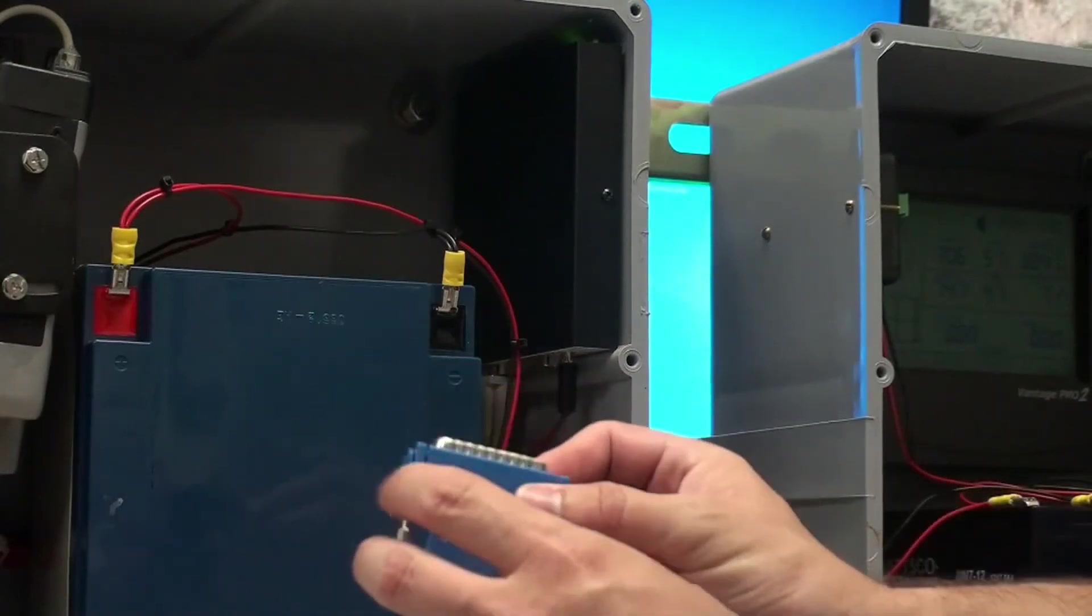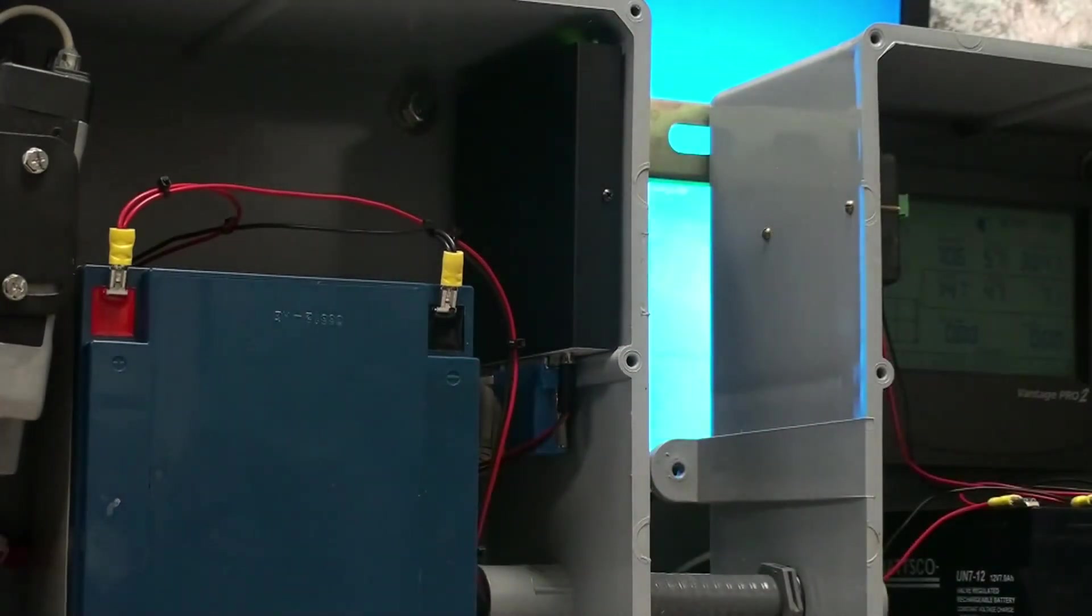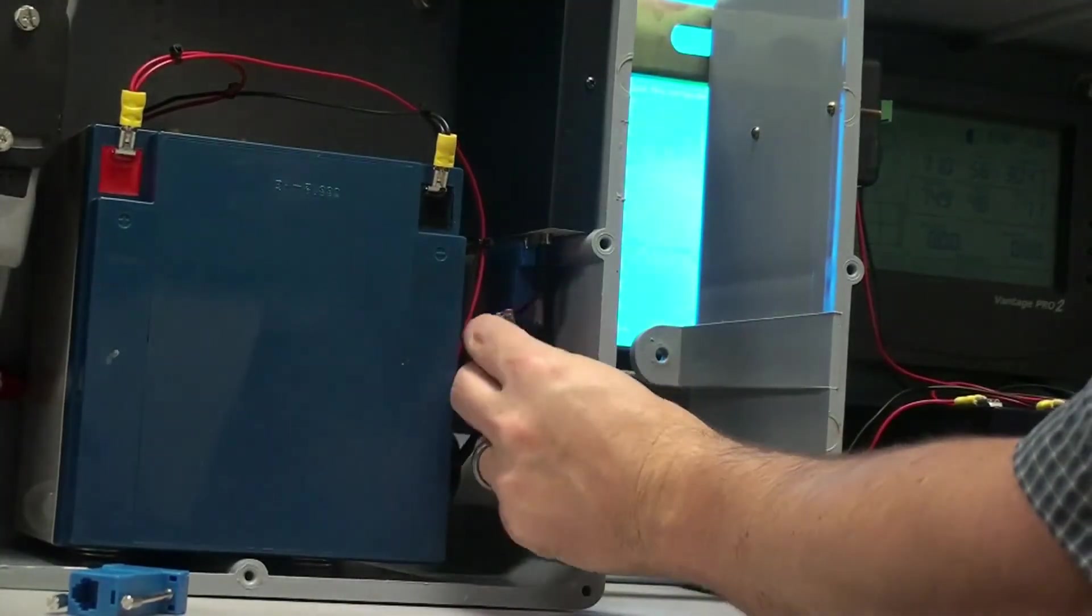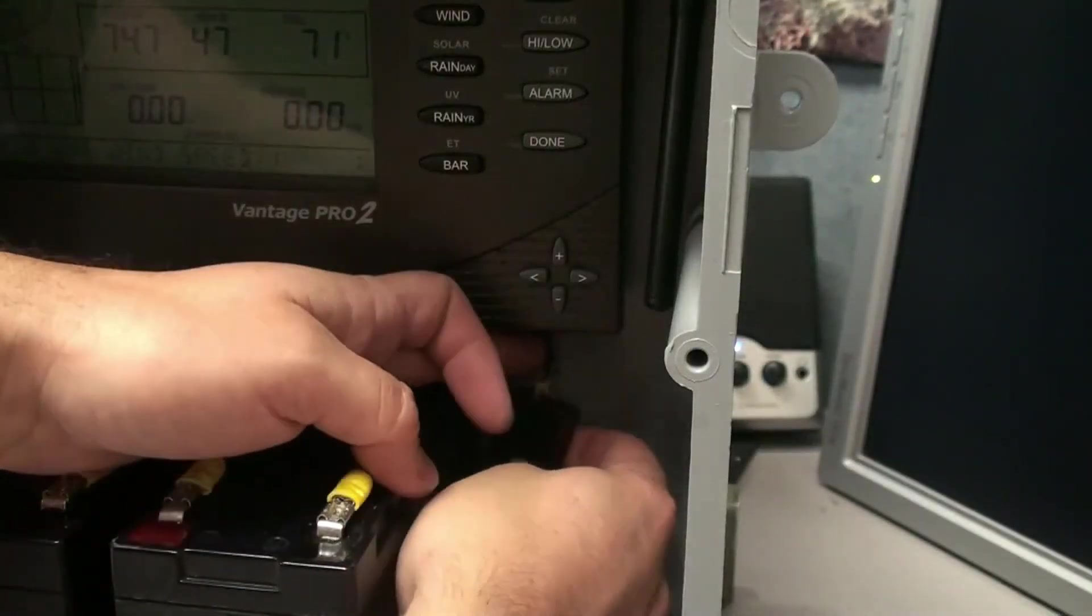Now we can attach the weather link supplied DB25 to RJ11 blue TNC adapter and connect the included cable. After feeding the cable through the flex conduit, connect the other end to the weather console APRS data logger.